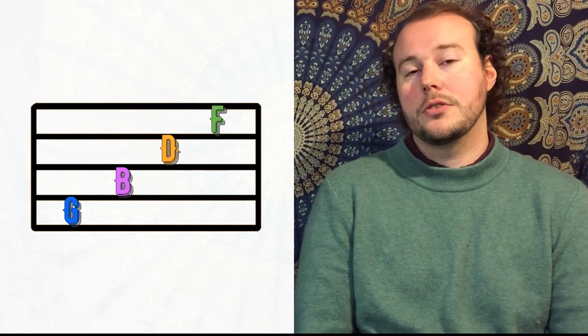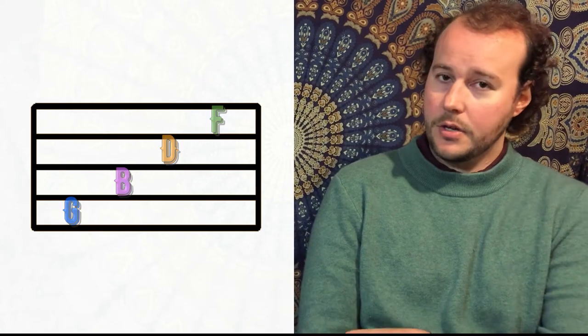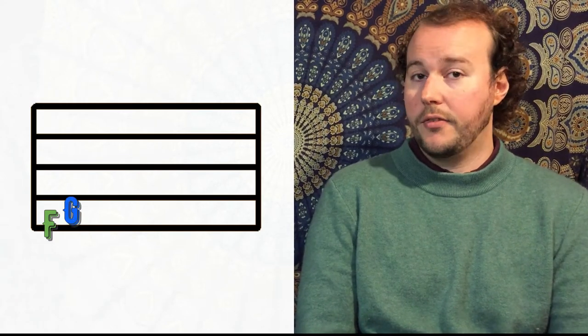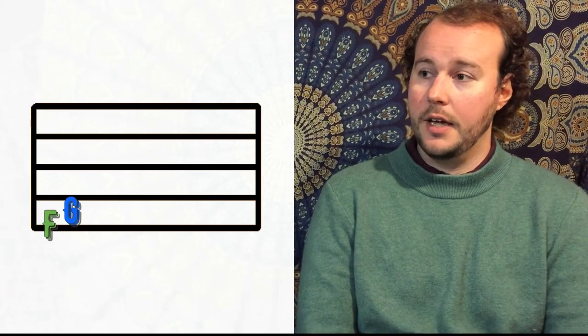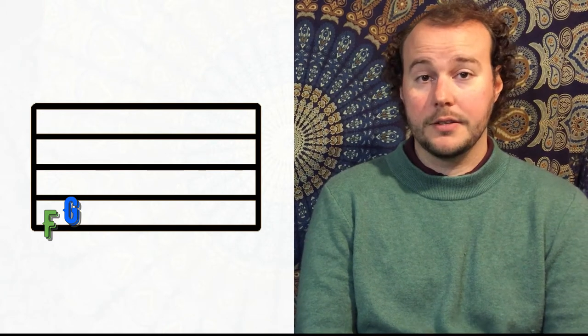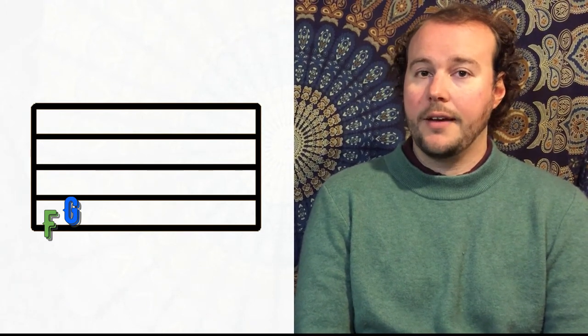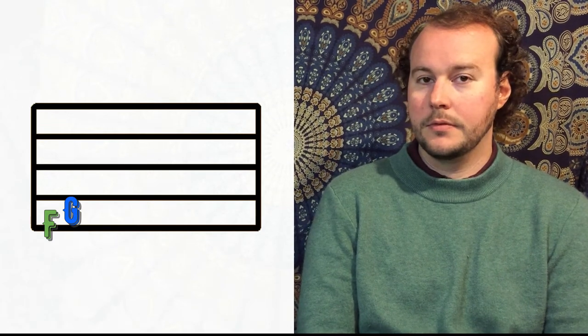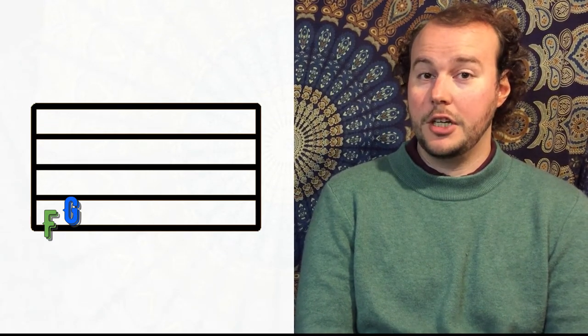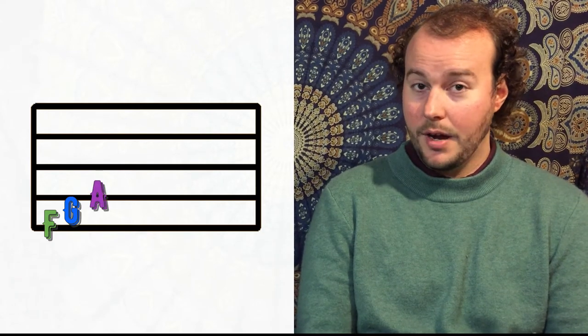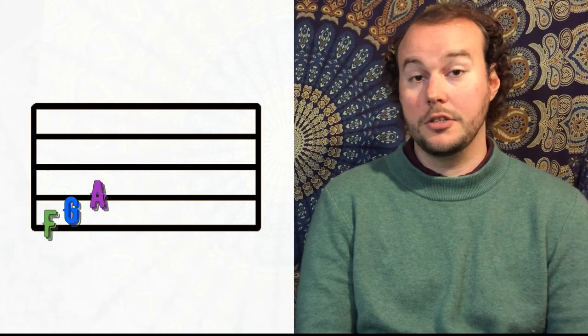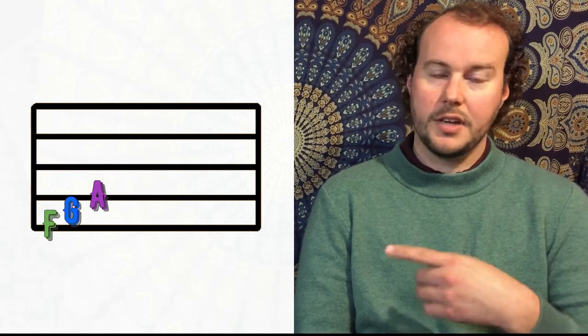So as we read notes on the staff, if we erase all of that, and we actually start from the bottom line, we start at F. The next letter would be G. So notice that F is the first line, and then G is the first space. So what would come after G? So what would the next line be? So F, G, and then A. Remember how we said in the musical alphabet, we come right back around to A once we get to G. Once we get to either end, we just kind of wrap around.